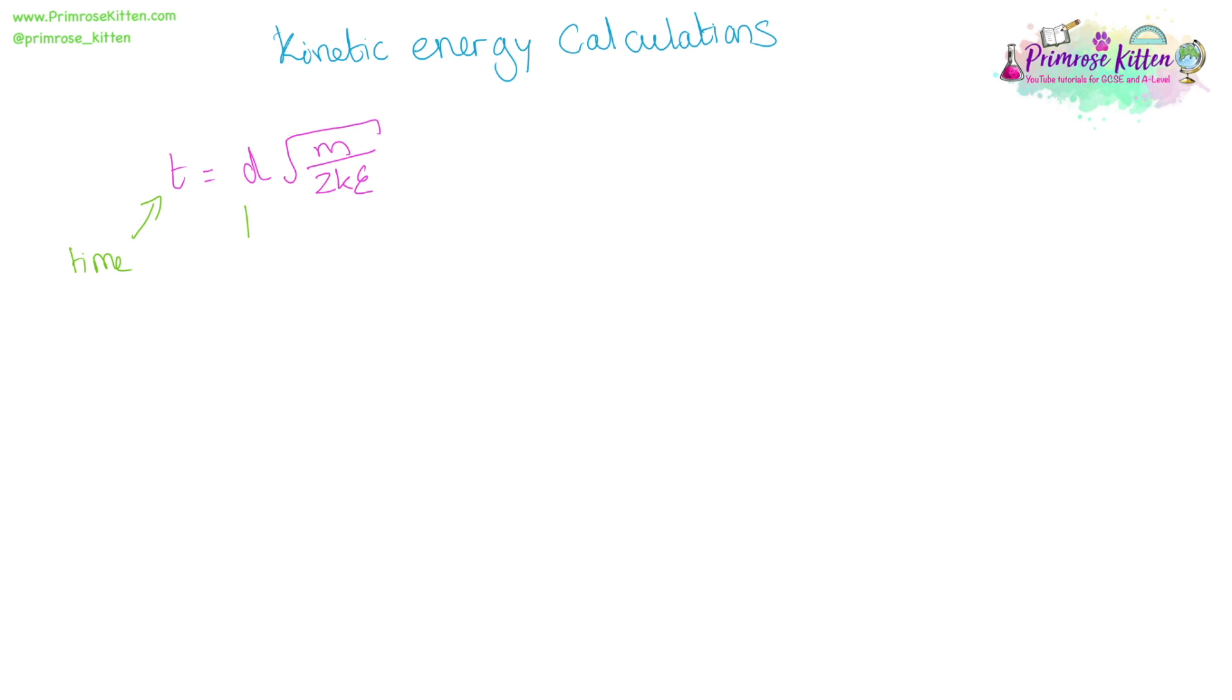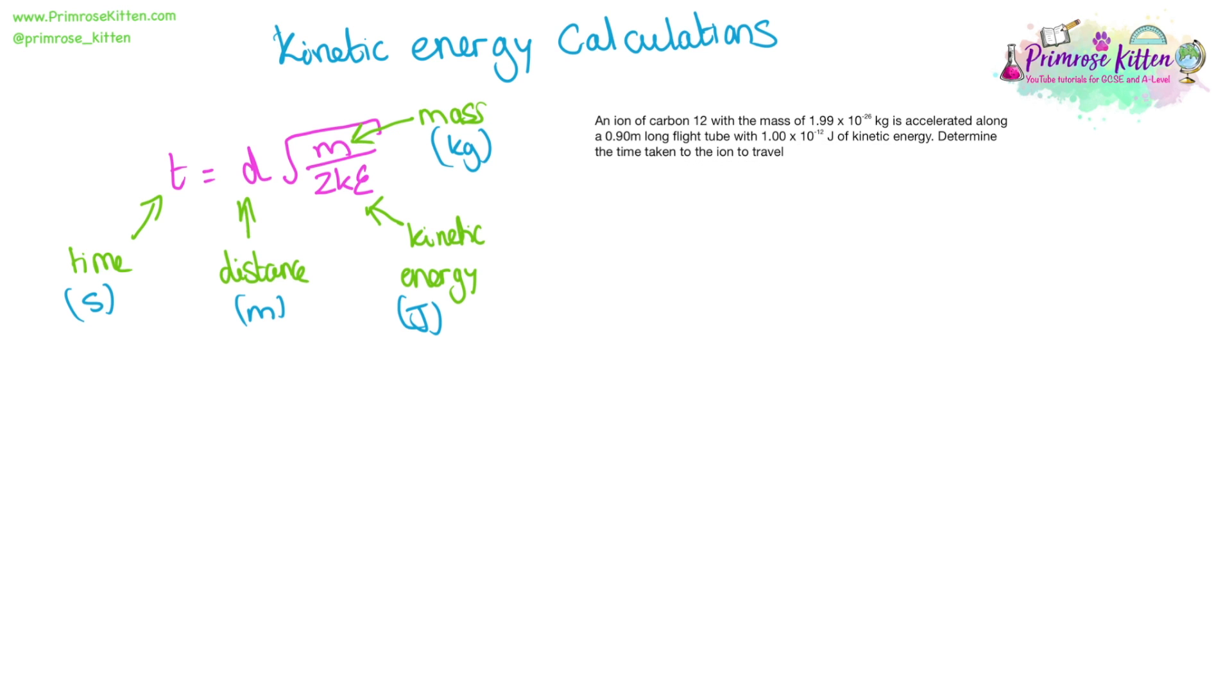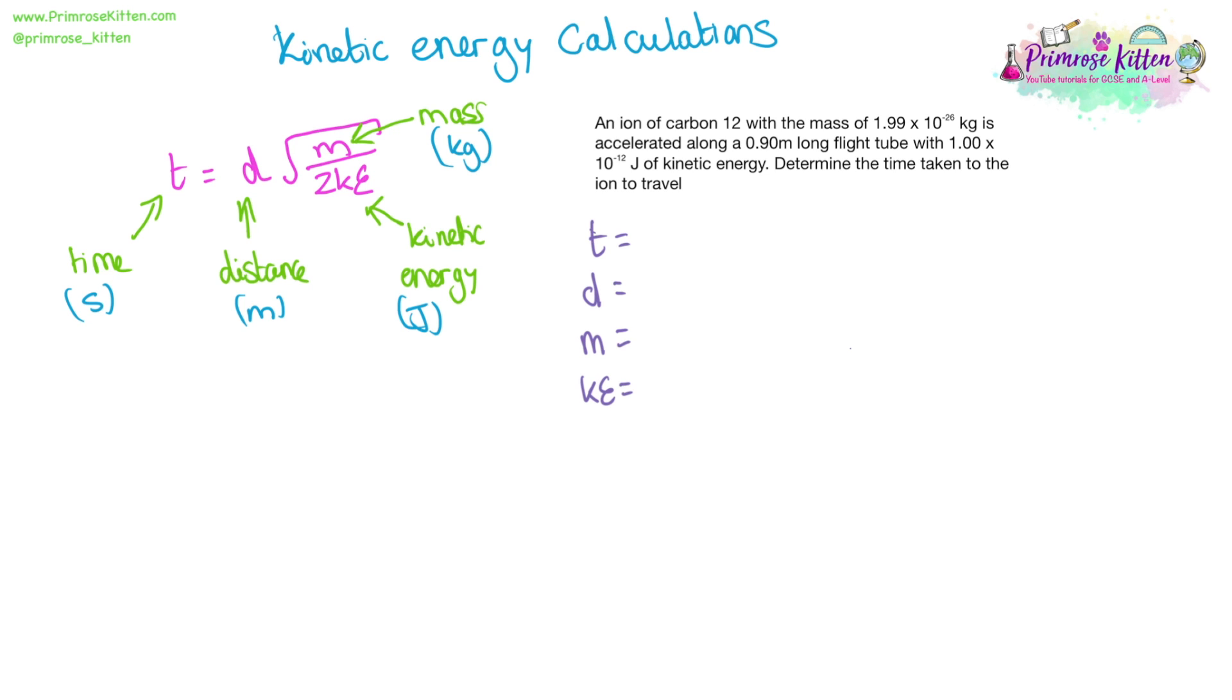Now we can take that equation that we worked out on the other side with T equal time, D equals distance, KE is kinetic energy, and M is mass, and we can use that to answer a question. An ion of carbon 12 with a mass of 1.99 times 10 to the minus 26 kilograms is accelerated upon a 0.90 meter long flight tube with 1 times 10 to the minus 12 joules of kinetic energy, determining the time taken for the ion to travel. Now with any long wordy equation that you see in chemistry, in biology, in maths, it doesn't matter what it is, the first thing I want you to do is to pull all of the numbers out.